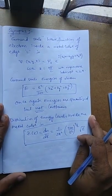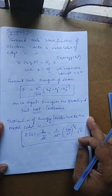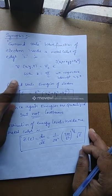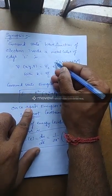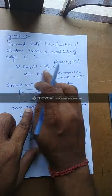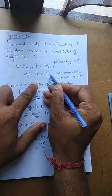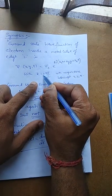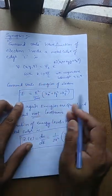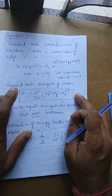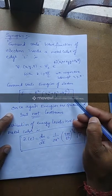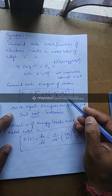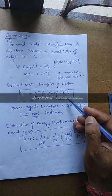To summarize: the ground state wave function of an electron is ψ = ψ₀·e^(ikₓx + ikyy + ikzz), the allowed k values are k = ±2nπ/L, and the total ground state energy is E = ℏ²k²/2m. This energy is not continuous — k values are discrete, so the momenta and energies of the electron are quantized.